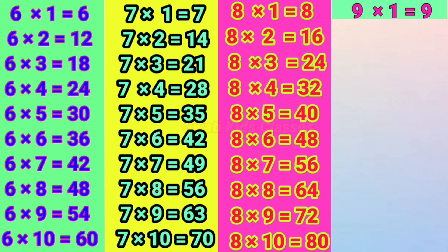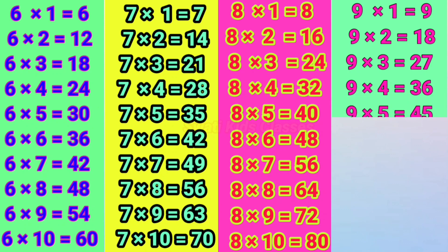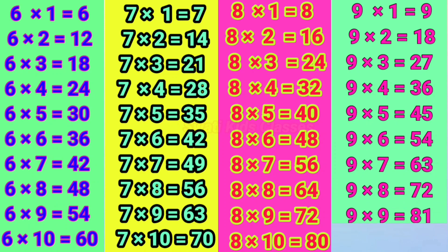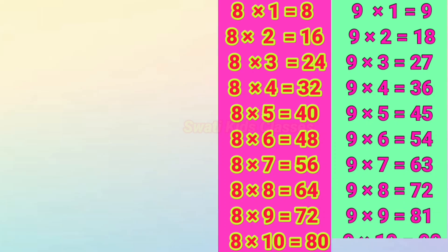9×1=9, 9×2=18, 9×3=27, 9×4=36, 9×5=45, 9×6=54, 9×7=63, 9×8=72, 9×9=81, 9×10=90.